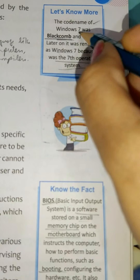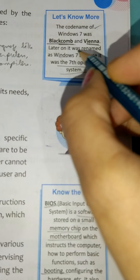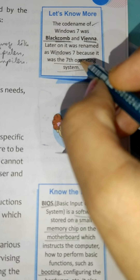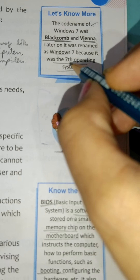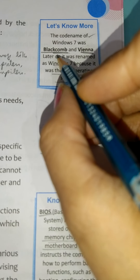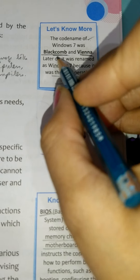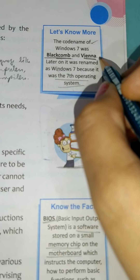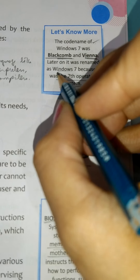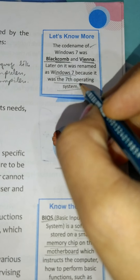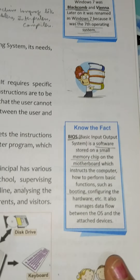The code name of Windows 7 was Black Bomb and Vienna. Later on it was renamed as Windows 7 because it was the 7th operating system. So you have to learn both the names — the earlier names were these two, but afterwards they kept the name Windows 7 because it was the 7th operating system.